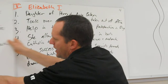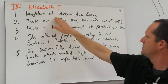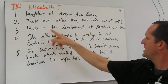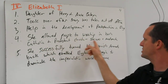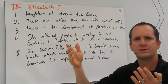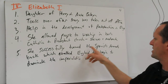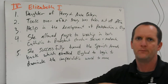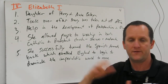She did not last long in office because things were so topsy-turvy. Then Elizabeth I came to power. She was the daughter of Henry and Anne Boleyn, and took over after Mary. She helped in the development of Protestantism in England but allowed people to worship in both Catholic and Protestant churches — she was more of a moderate. She was Protestant but did not persecute the Catholics, so she allowed a mixed religion throughout the country. She successfully turned the Spanish Armada back, which enabled England to begin to dominate the imperialistic world to come. She was one of the greatest monarchs of all time in England and, for that matter, the world.